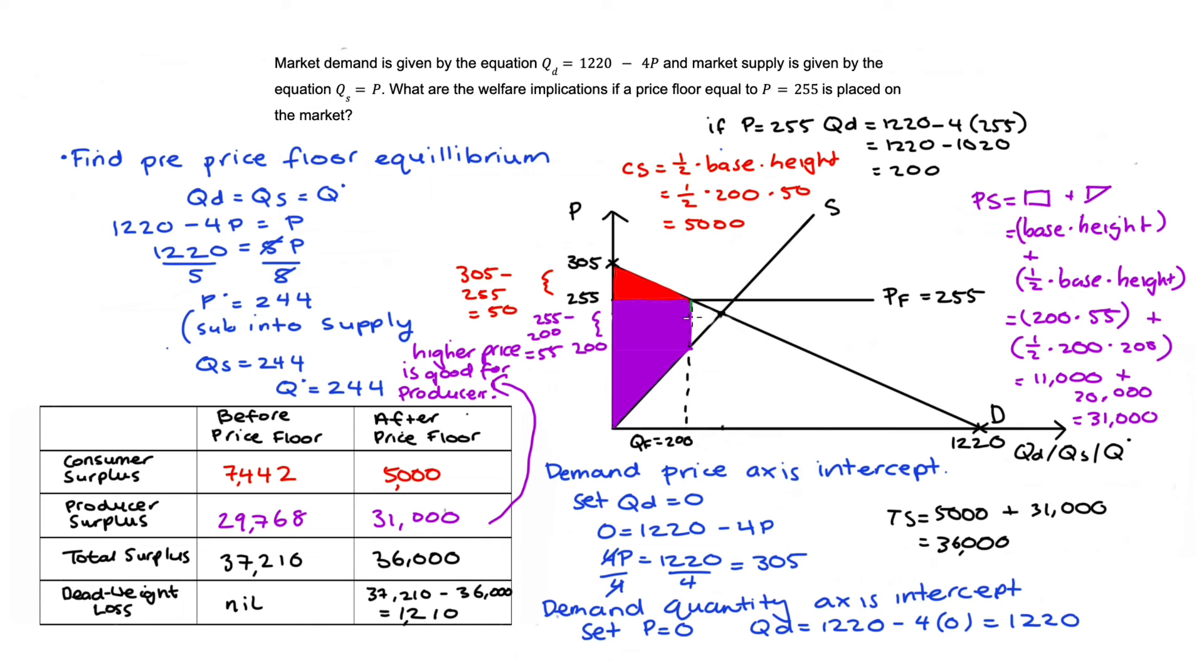This amount should be the same as this area here, this triangle. Our triangle is half times base times height. Our base is 244 - 200 = 44, and the height is 255 - 200 = 55. This equals 1,210. So this all makes sense and that's our welfare analysis of the binding price floor.